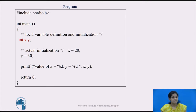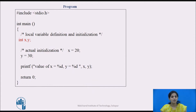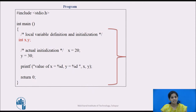Consider this example. In the main function we create two variables, assigning the value 20 to x and 30 to y. We display only the values of x and y on the screen using the printf statement. The scope of x and y is within only that particular block, so x and y are local variables.